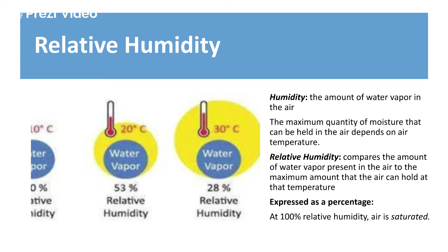So both terms are now clear. Humidity refers to the presence of a specific amount of water vapor at a given time and temperature. Relative humidity compares the actual amount of water vapor present to the maximum amount the air can hold, expressed as a percentage. At 100% relative humidity, air is saturated — no more water vapor can be added.